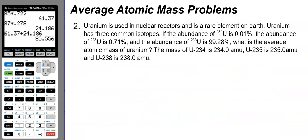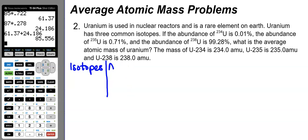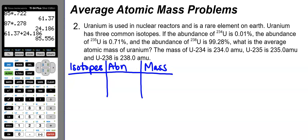Our next problem: uranium is used in nuclear reactors. This problem gives us three common isotopes of uranium with abundance data. We'll organize the information into a table with columns for isotope, abundance, and mass.